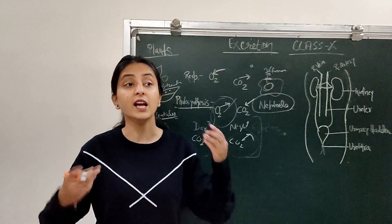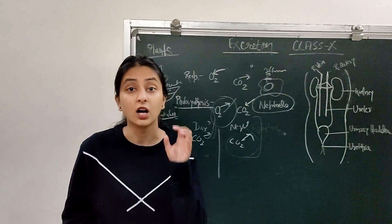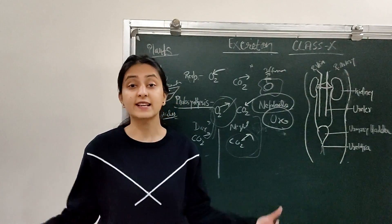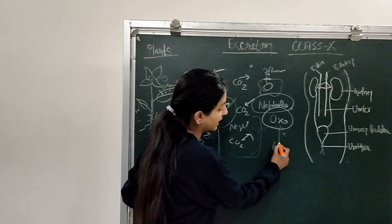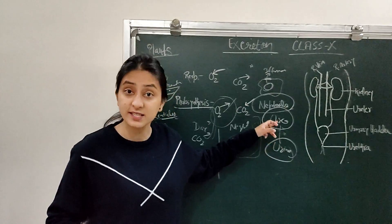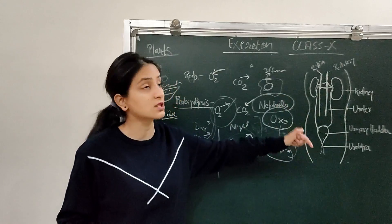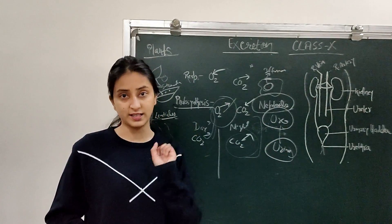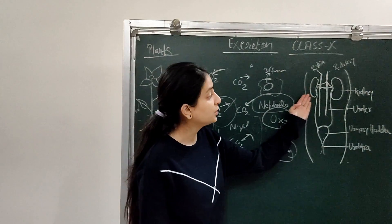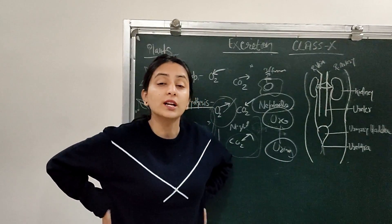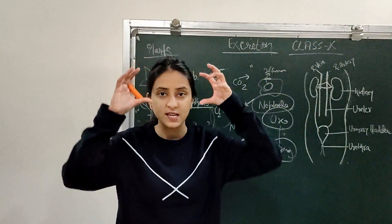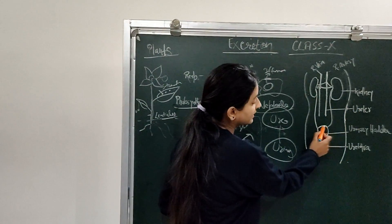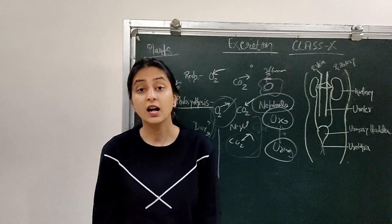The human excretory system is responsible for releasing nitrogenous waste — that is urea — from the body, along with excess salt and excess water. The final product is urine. The human excretory system consists of a pair of kidneys — so there are two kidneys in our body, located at the back side of the lower abdomen, bean-shaped. There are also two tubes called ureters and a urinary bladder where urine is stored before being released.